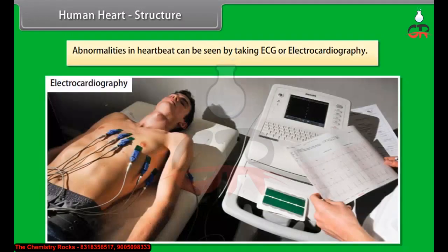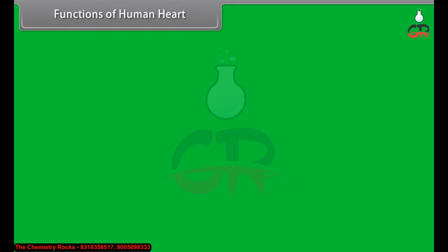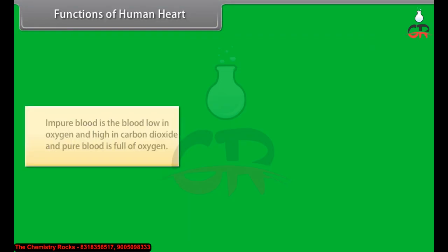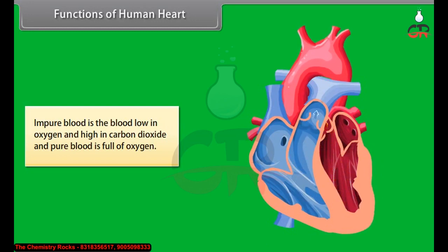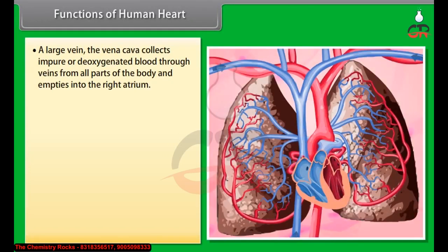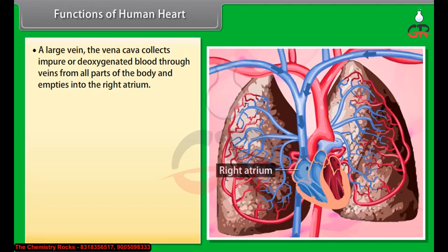Abnormalities in heartbeat can be detected by taking an ECG or electrocardiograph. Impure blood is low in oxygen and high in carbon dioxide, while pure blood is full of oxygen. A large vein, the vena cava, collects deoxygenated blood through veins from all parts of the body and empties it into the right atrium.